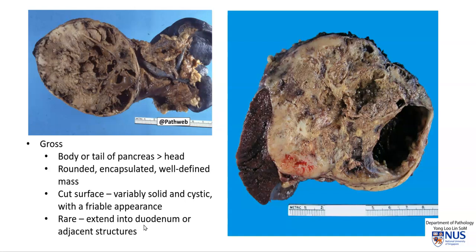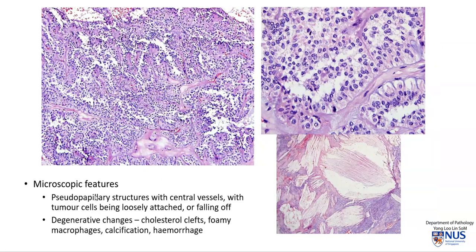Very rarely, this tumor may extend into adjacent organs such as the spleen or the duodenum. There will be a separate video describing the microscopic features in detail, however briefly, this is a very distinctive appearing tumor under the microscope with these papillary-looking areas — this is why it's called pseudopapillary — with central slender blood vessels, and the tumor cells are actually loosely attached and appear to be falling off.